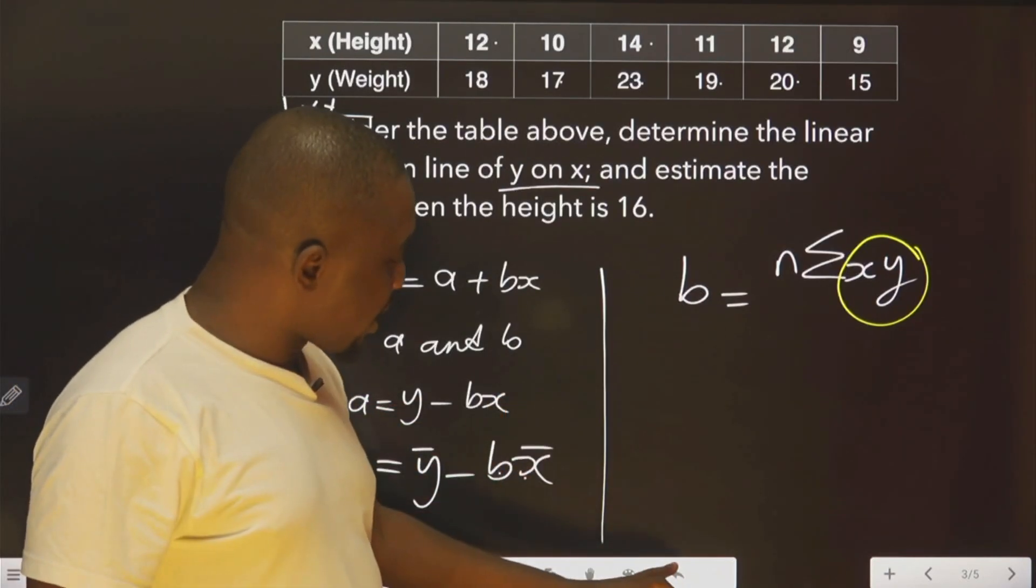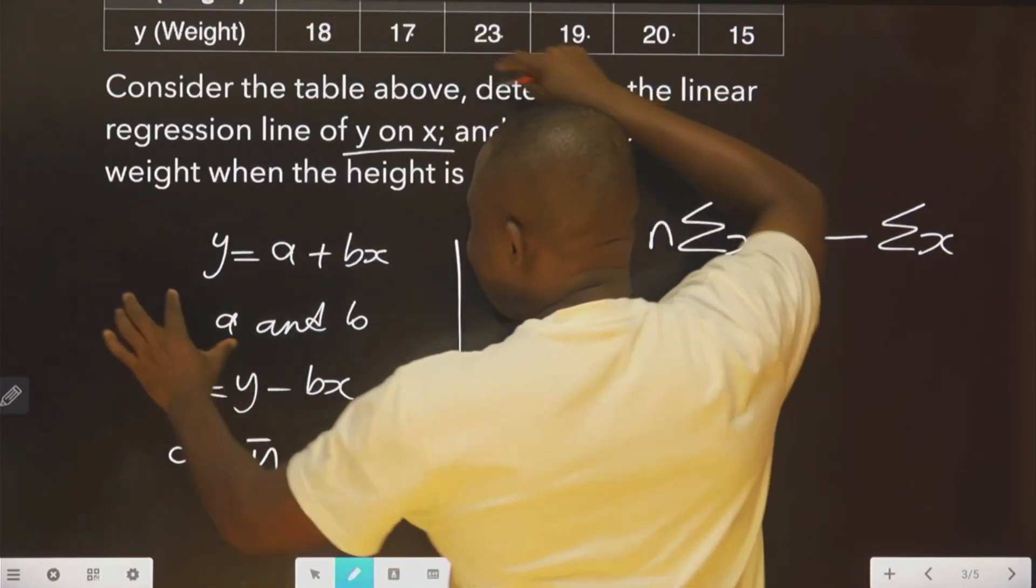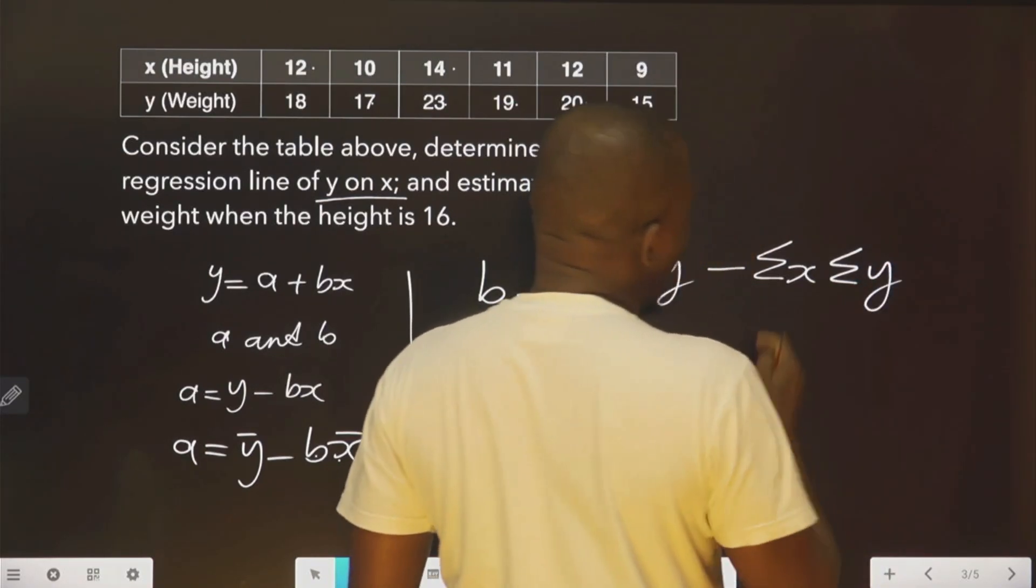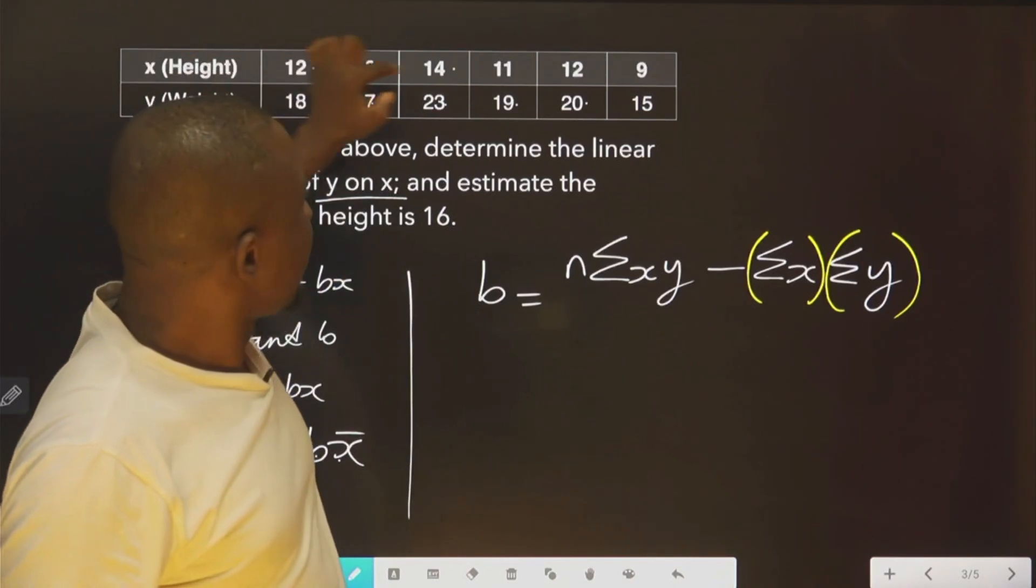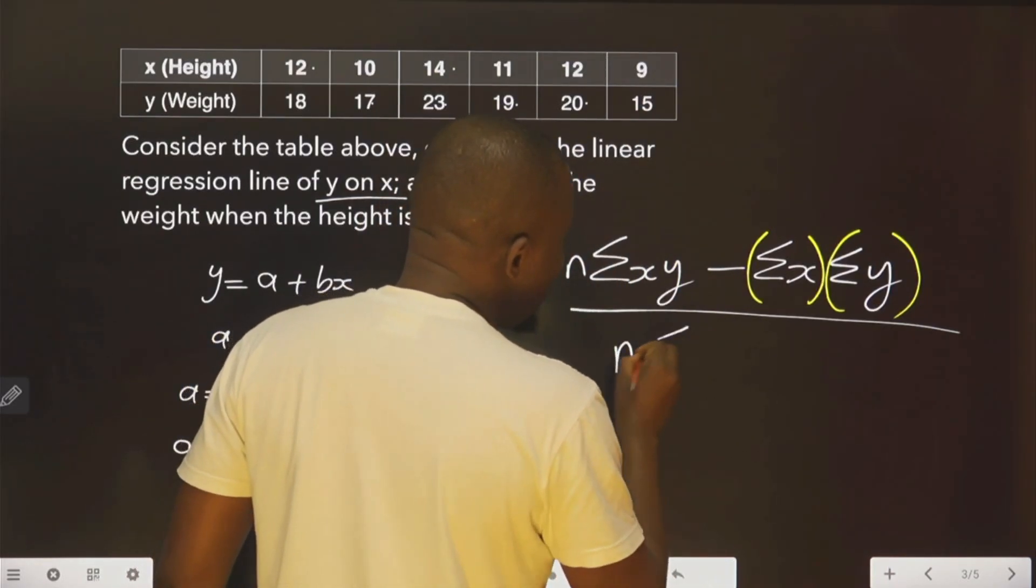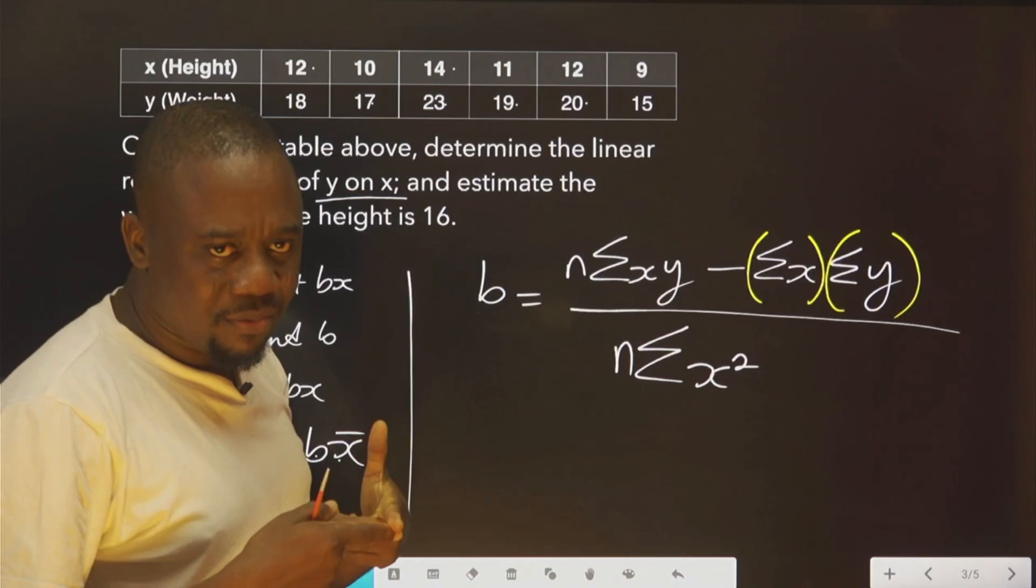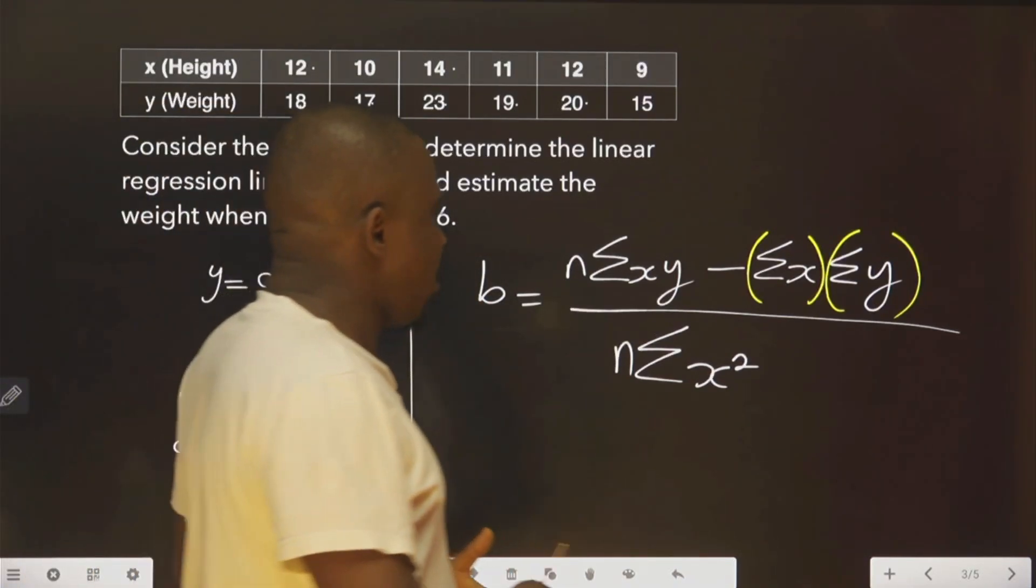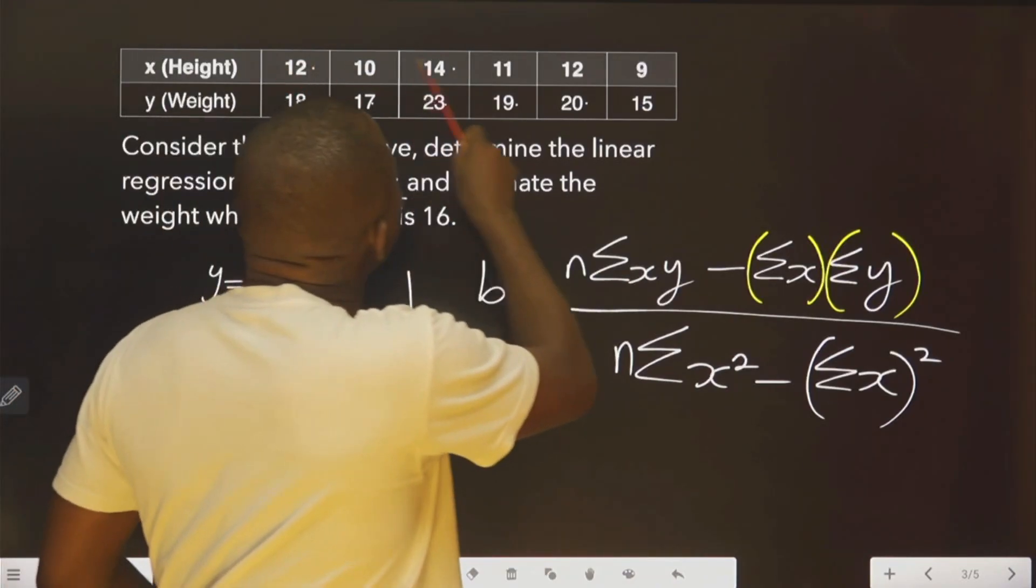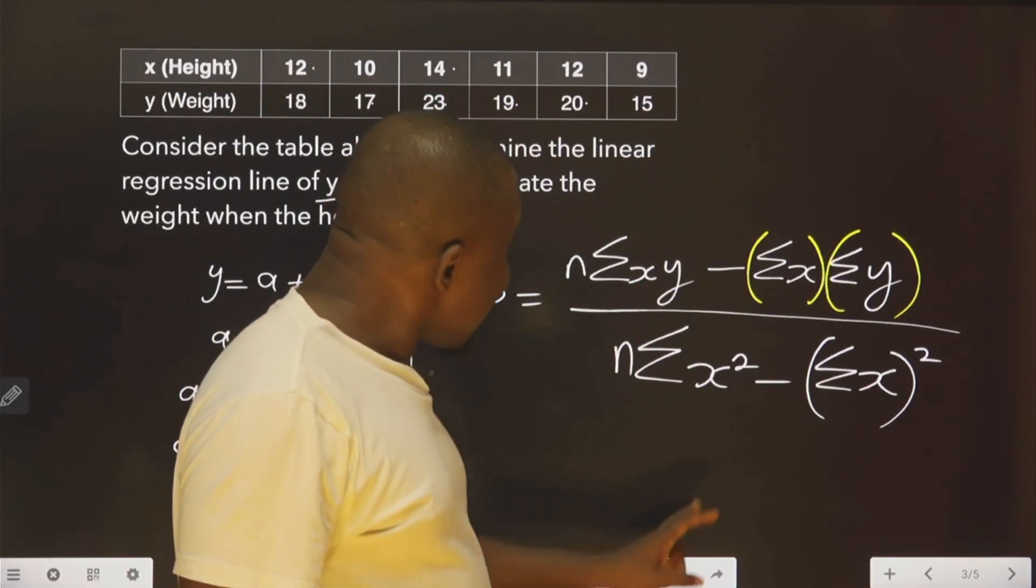After that, the next one is you sum all the x, all these x, you sum all of them, multiplied by you sum all the y. That is, the summation of this multiplied by the summation of this, all over the number of items. Again, summation of the square of x. You square each of them, then you add them. You square each of them, then you add them together. Minus, the summation of x, it's square. You sum everything, then you square. That is the meaning of this. Sum all the value of x, then you square. This is the formula to get b.